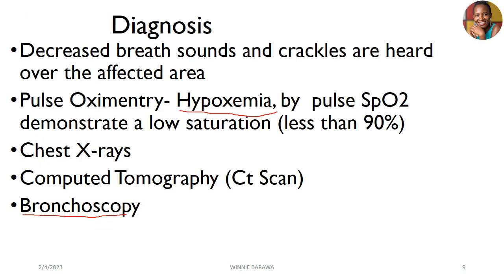For diagnosis, which methods can we use to check out the presentation of atelectasis? Number one is physical examination, where we look for decreased breath sounds. When the alveoli collapse, these are the areas where we listen for breath sounds using the stethoscope. When they have collapsed, you will not find sounds there — you'll have decreased breath sounds. In some cases if the lung is severely affected, you'll find crackles over the affected areas. Pulse oximetry will show hypoxia — low oxygen saturation — with SpO2 values less than 90.